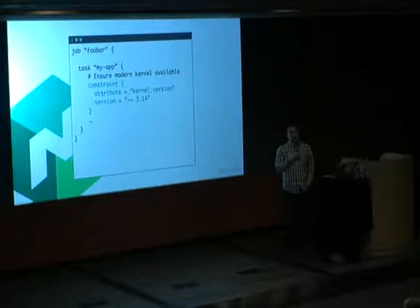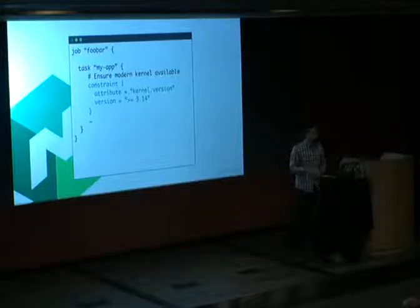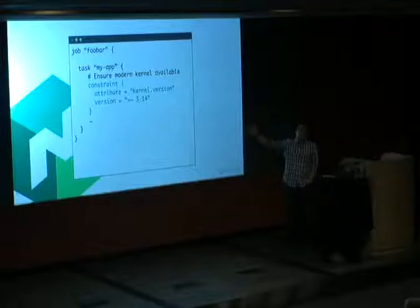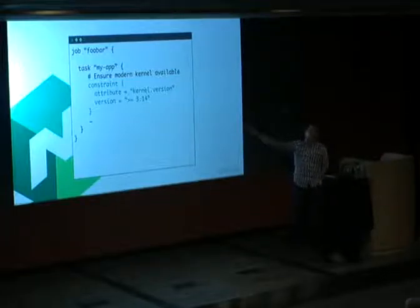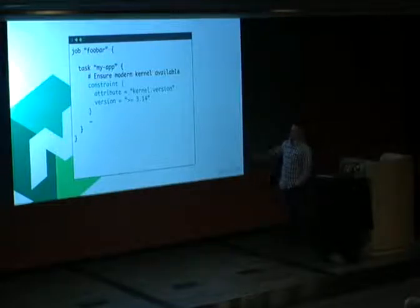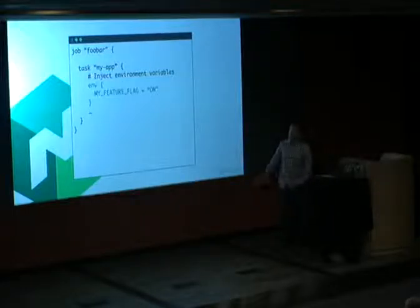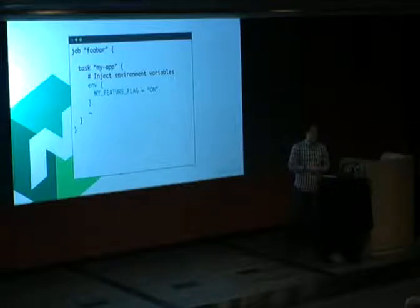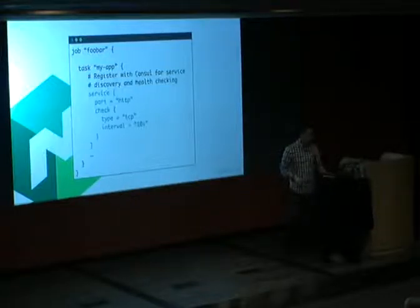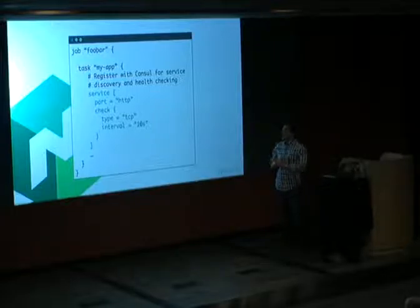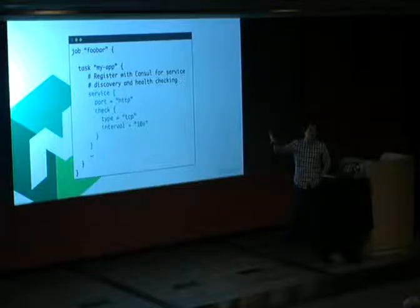There's a lot of built-in metadata in Nomad. You can do arbitrary metadata, but we expose things like kernel versions, CIDR blocks, and if you're on AWS we expose availability zones. You can do more than just equality comparisons — for example, there's semantic version comparison so it splits version numbers intelligently rather than doing a plain string comparison.